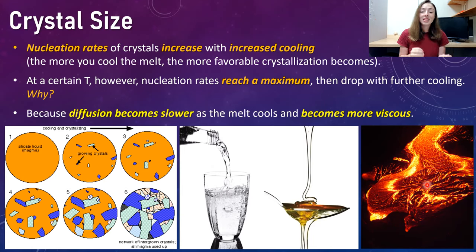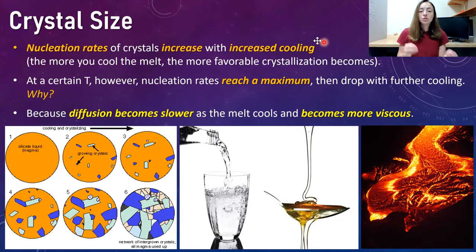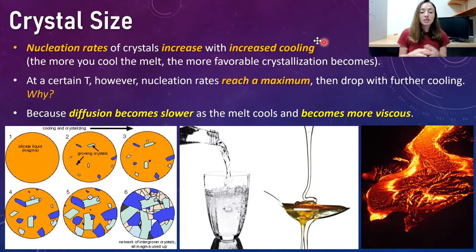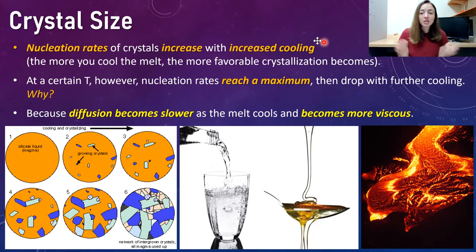Nucleation rates of crystals increase with increasing cooling, because the more you cool the melt, the more favorable crystallization becomes. However, at a certain temperature, nucleation rates reach a maximum and then drop off with further cooling. That's because diffusion becomes slower. You can imagine that as a melt cools and becomes almost fully crystallized, it becomes so viscous that those diffusion rates slow down so much that nucleation can't even occur, because the ions can't diffuse through the material anymore. So nucleation of new crystal grains gets much slower at that point.